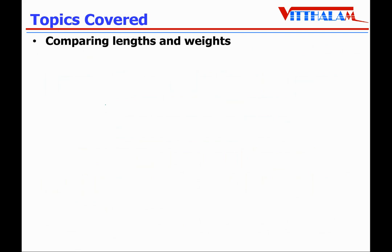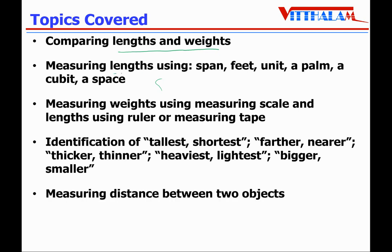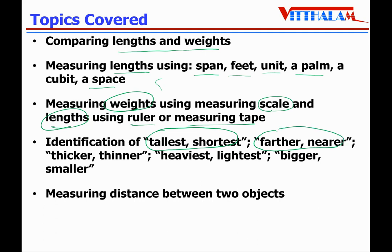In this chapter, the topics covered include: comparing length and weight, measuring length using span, feet, palm, cubit or pace, measuring weights using a measuring scale, and measuring length using a ruler or measuring tape. We will also talk about identification of tallest and shortest, farther and nearer, thicker and thinner, heaviest and lightest, bigger and smaller, and measuring the distance between any two objects. Let's start the first section: Mathematical Reasoning.